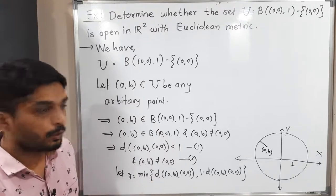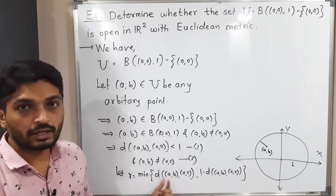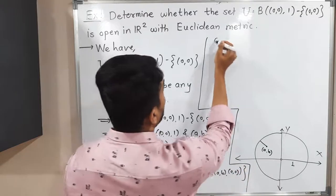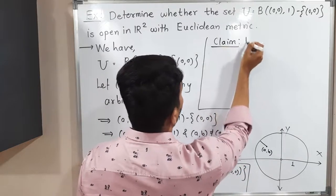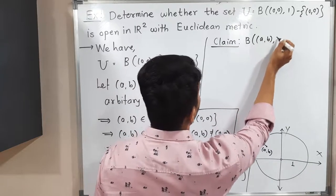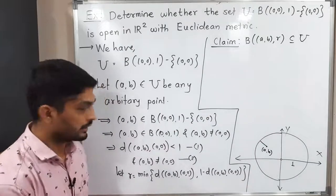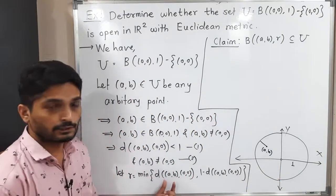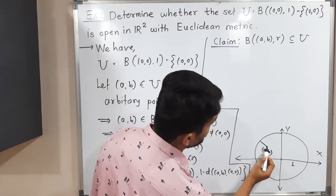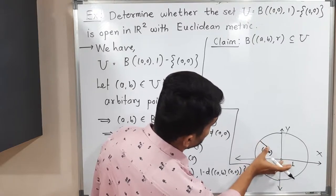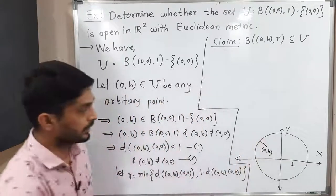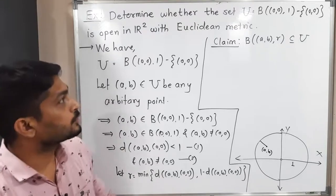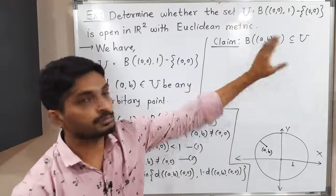We are going to prove that the open ball with center (A, B) and radius R will be a subset of set U. So that will be my claim. My claim is: open ball with center (A, B) and radius R is a subset of U. R is defined as the minimum of d((A,B),(0,0)) and 1 minus d((A,B),(0,0)). Open ball with center (A, B) and radius R is a subset of U — this is our claim, and we are going to prove it.